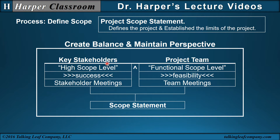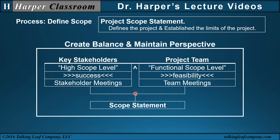Along with balance, the project manager must also maintain a perspective. At the high scope level, the perspective of success should not drift to feasibility. At the functional scope level, the perspective of feasibility should not be distracted by considering the overall success of a project. If the perspectives for both levels are not maintained, then the meetings will usually be ineffective. But creating a balance and maintaining a perspective provide a basis for a strong scope statement.